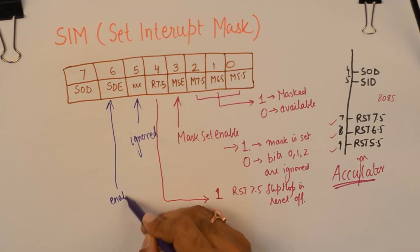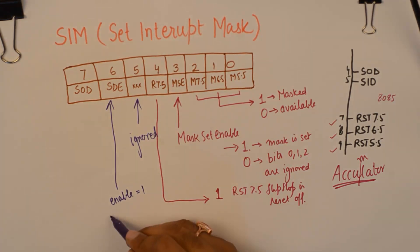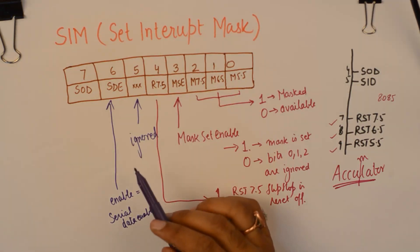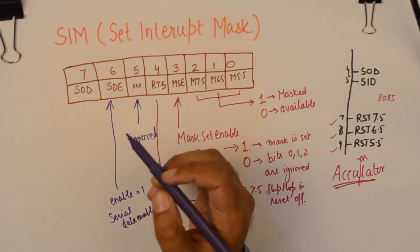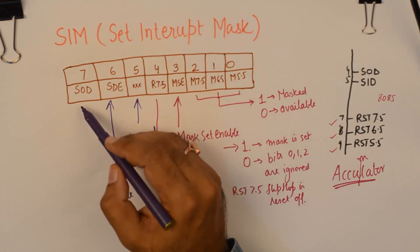To enable, you need to make it 1, which is serial data. Once this bit is enabled, you can send the data. It could be 0 or 1 by putting the data here. This is the serial output data.